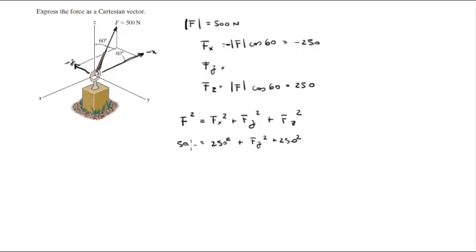And this is 500 squared, so when you solve for F of Y, you're going to get that F of Y is equal to 353.55. However, it's negative because you can see that it's going towards the negative Y direction.